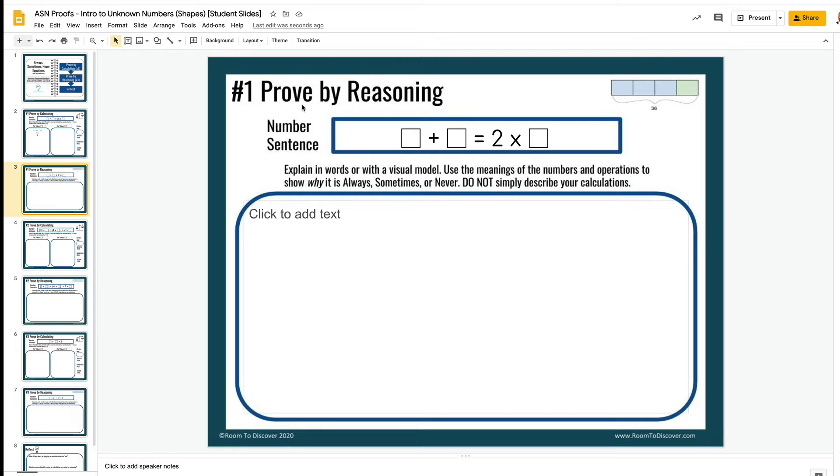Then the next step is to prove by reasoning. So once they determine is it always true, sometimes true, or never true, they have to tell me why. They shouldn't just explain their calculation in words. In this case, we're explaining that two copies of something is always the same as adding that thing to itself.